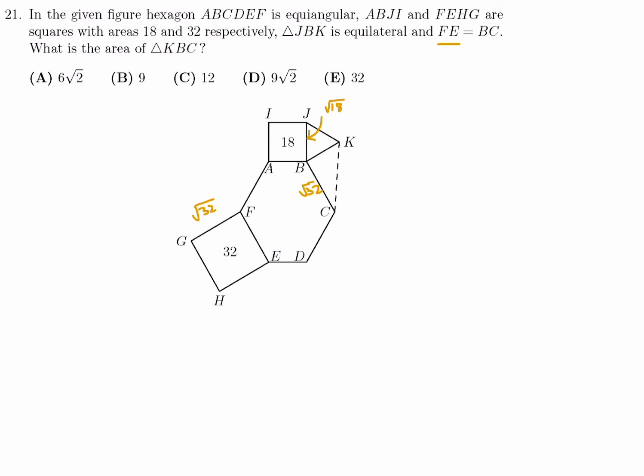Now, BK is root 18 because that triangle is equilateral. So, we have to figure out the triangle KBC, this triangle right here. Well, it would really help if this was a right angle, but I'm not 100% sure that it is. Because it looks like it, but I have to be sure. Well, this is 60.